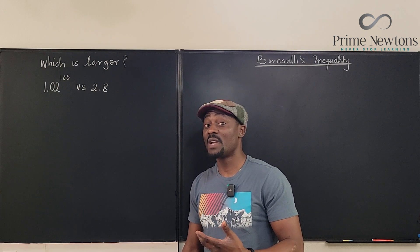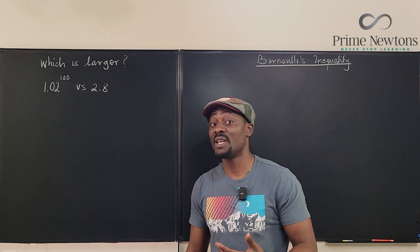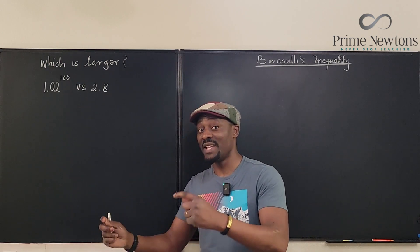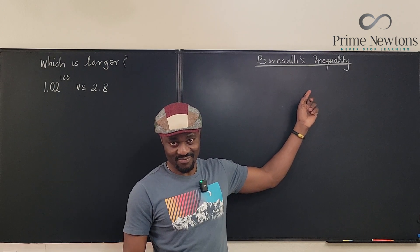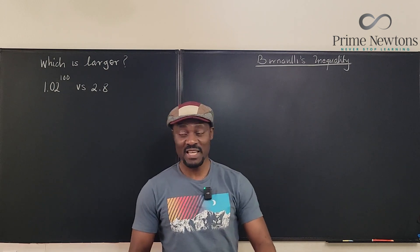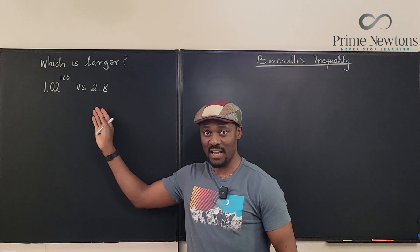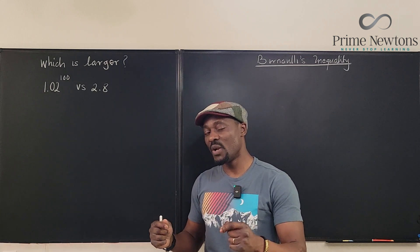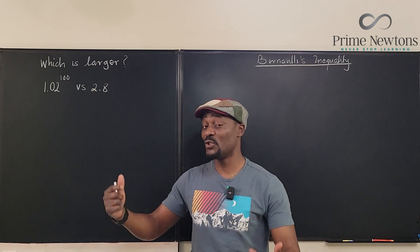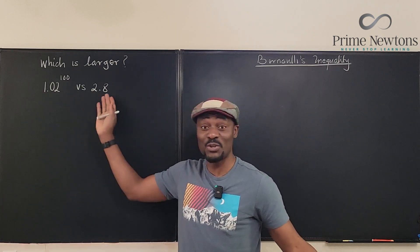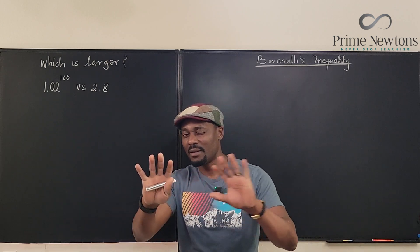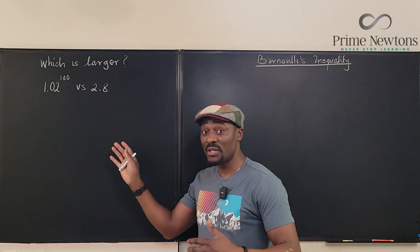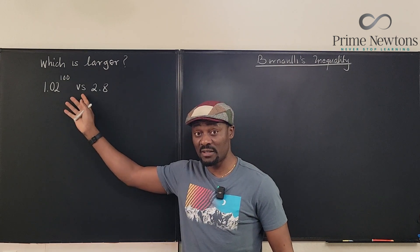How do you show it without calculating 100 times or using a calculator? That is where a very nice tool shows up — it is called Bernoulli's inequality. The main use of Bernoulli's inequality is not for this kind of exercise, but this illustrates how useful it is. It is more important in proofs, where you don't see the numbers but you can tell which expression is bigger.